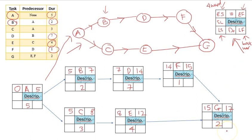And as for the backward pass, we're going to do it backward. We're going to calculate the LS and LF. So for the last activity, this will be 17. The LF will be the same as this. And how to calculate this is just simply 17 minus 2. You will get 15. And this 15 will become the LF for the previous activity.